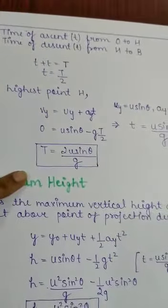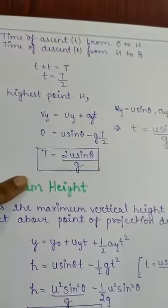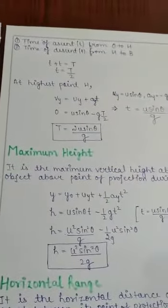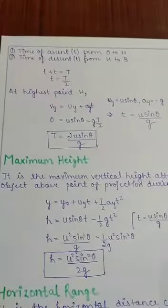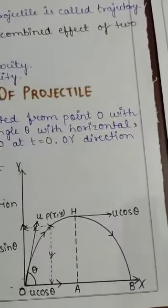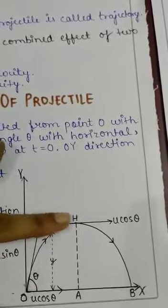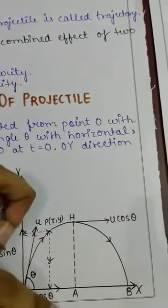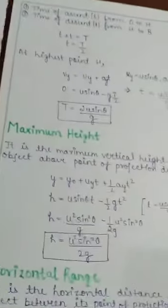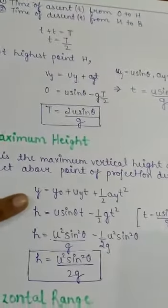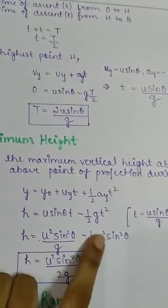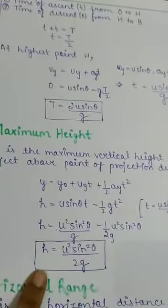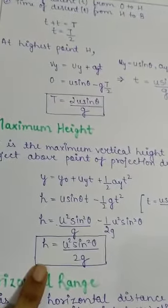Now, what is the maximum height? Maximum height is the maximum vertical distance which the object traveled above the point of projection. For example, if we look at this figure, the maximum vertical distance the object has covered is at H point. So, H is the maximum height. Now, we will derive the height using this equation: y = u sin theta T minus half g t square. After substituting t = T/2, maximum height h is equal to u square sin square theta upon 2g.